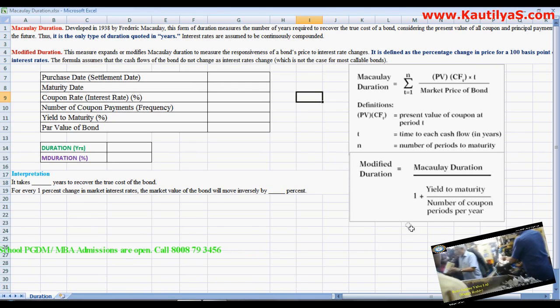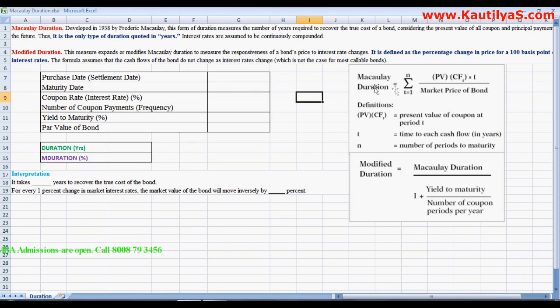Durations can be calculated using equations. Macaulay duration equals present value of cash flows times time divided by market price of the bond, and modified duration is Macaulay duration divided by 1 plus yield to maturity divided by number of coupons per period.